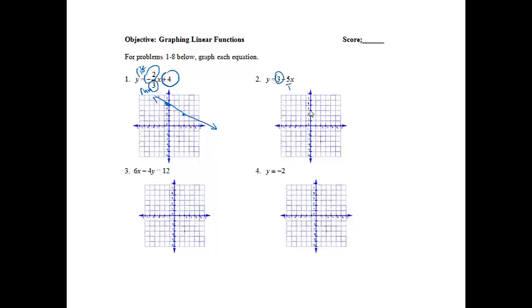So from that 3, I am going to go down 5: 1, 2, 3, 4, 5, and over 1. So then I'm just going to connect them. That's a very steep line. And there we go.